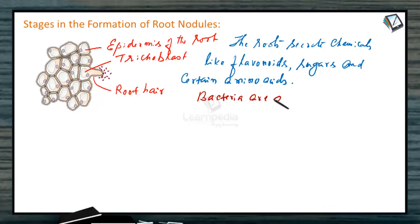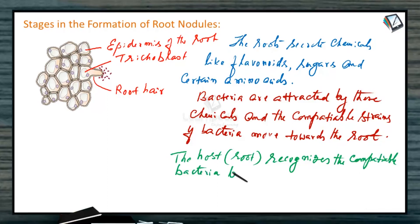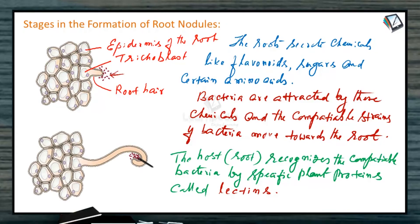Bacteria are attracted by these chemicals and the compatible strains of bacteria move towards the root. The host that is root recognizes the compatible bacteria by specific plant proteins called lectins. Look at the bacteria being attracted to the root and when these bacteria attach to the root hair, the tip of the root hair forms a curl.